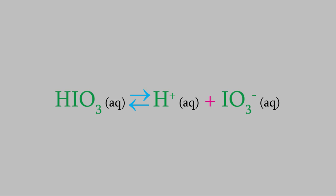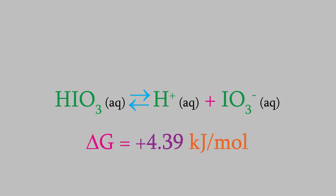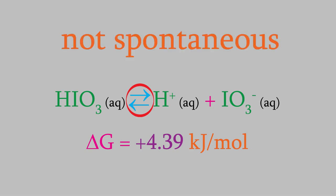Here's another example in which iodic acid dissociates to form aqueous hydrogen and iodate ions — we saw this one when we talked about weak acids back in video 22. The Gibbs free energy of this reaction is positive 4.39 kilojoules per mole. Like the previous reaction, this has a delta G between positive and negative 5 kilojoules, so this is a reversible reaction. But unlike the previous reaction, delta G is positive, so this reaction isn't spontaneous in the forward direction. Instead, the reaction favors the reactants, so it is spontaneous in the reverse direction.